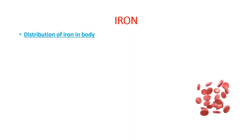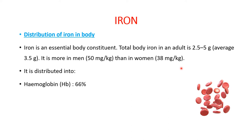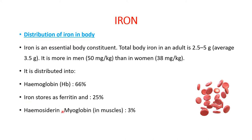The first class is iron. Iron is an essential body constituent. Total body iron in an adult is 2.5 to 5 grams — more in men at 50 mg/kg than in women at 38 mg/kg. Iron is distributed as follows: 66% in hemoglobin, 25% stored as ferritin, 3% as hemosiderin and myoglobin in muscles, and 6% as parenchymal iron present in enzymes.